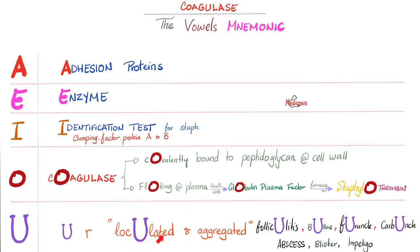Folliculitis, bullae, furuncle, carbuncle, abscess, blister, and impetigo — all of them are localized in a certain location. Versus Streptococcus pyogenes, which is coagulase negative; it cannot localize itself because it cannot make clots. Therefore, it will spread in the form of sepsis, cellulitis, necrotizing fasciitis, erysipelas, etc. Speaking of loculations, Staph aureus can lead to pleural effusion — exudative effusion with lots of loculations.